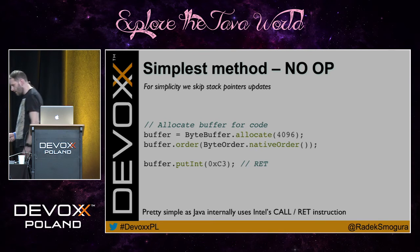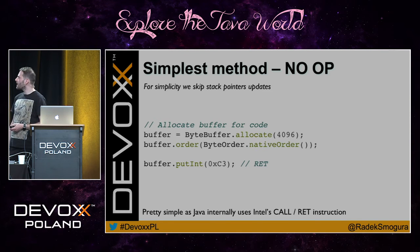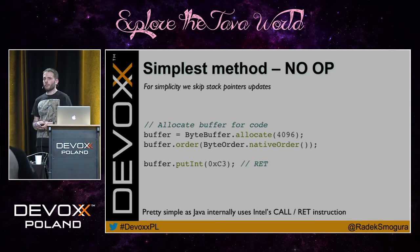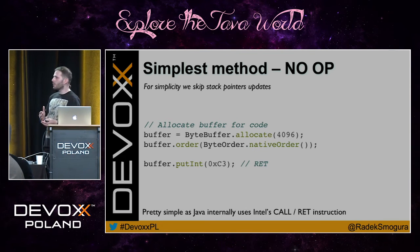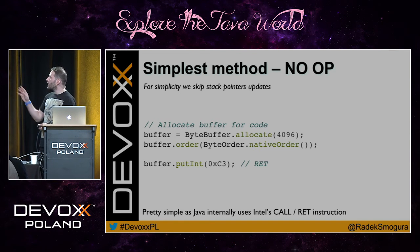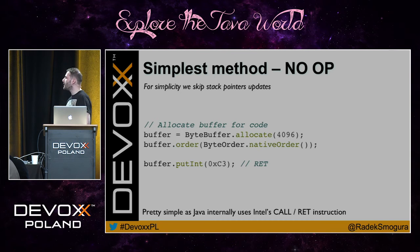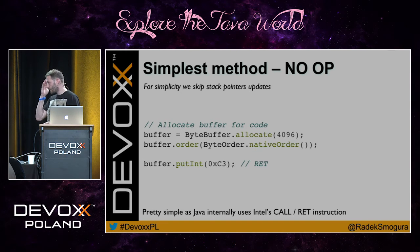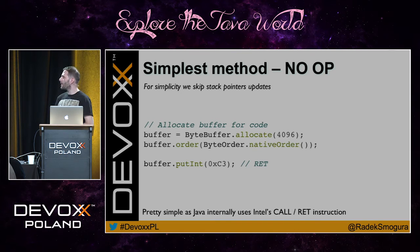For example, like this: here we create a byte buffer with some predefined, fairly large size, and we set the byte order to native order. This is important because we want to preserve the endian encoding of the integers we are going to expose — preserving big-endian or little-endian encoding. We then put just one byte: 0xC3, which is the opcode for the return instruction. This is how you work with JVM-CI at a very low level. This method works — if you install this code to replace your own Java method, the method will just return.